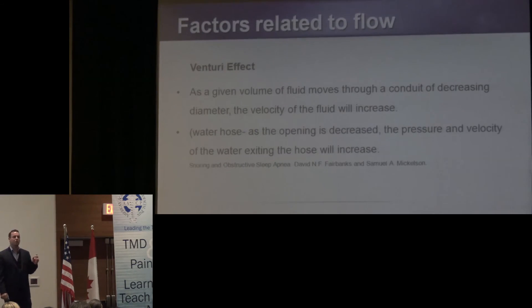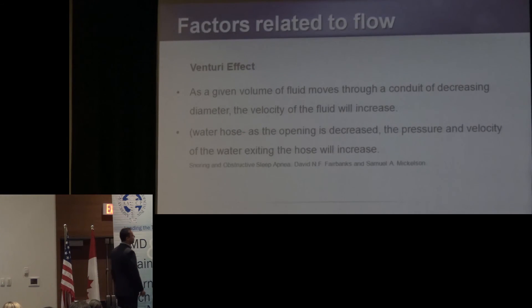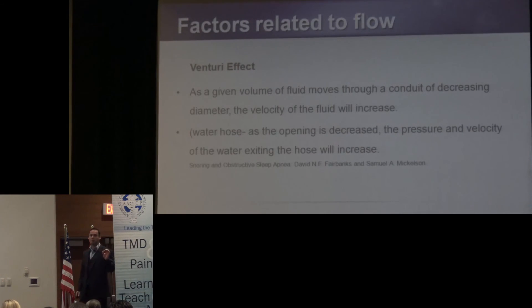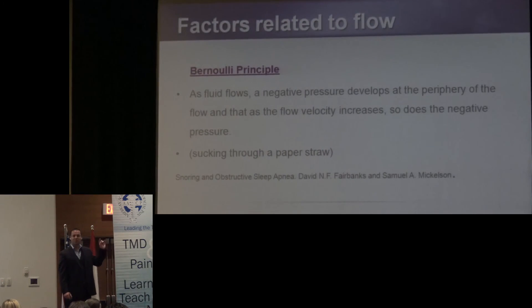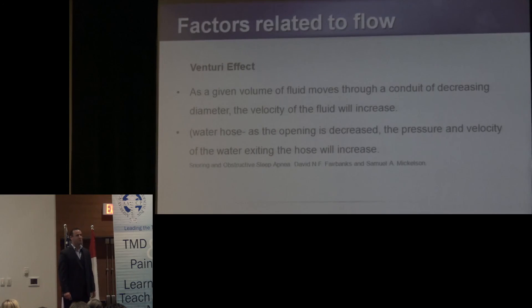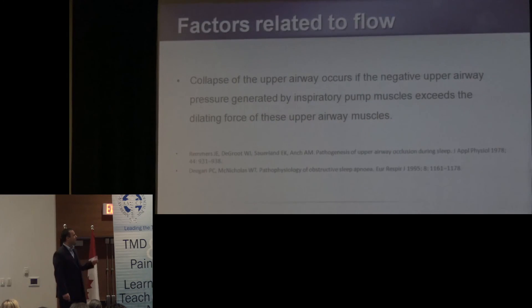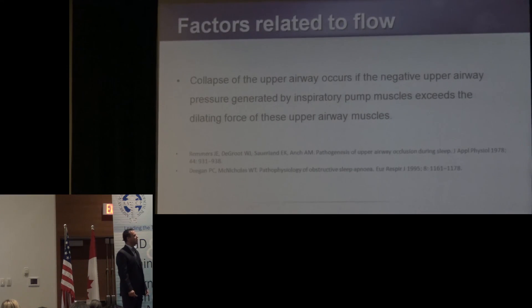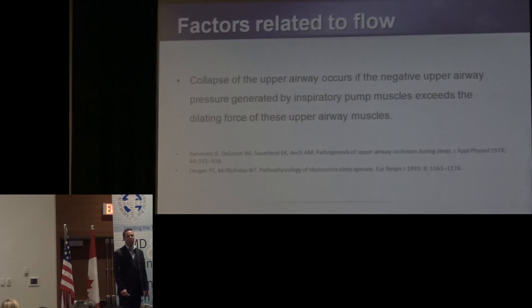The second factor is the Venturi effect, which looks at airway size. As a given volume of fluid moves through a conduit of decreasing diameter, the velocity of the fluid increases. The narrower the upper airway, the greater the velocity. So two aspects are operating: the Bernoulli principle, looking solely at breathing volume, and the Venturi effect, looking at airway size. Obstructive sleep apnea is essentially a collapse of the upper airway that occurs when the negative upper airway pressure generated by inspiratory pump muscles exceeds the dilating force of the upper airway muscles.